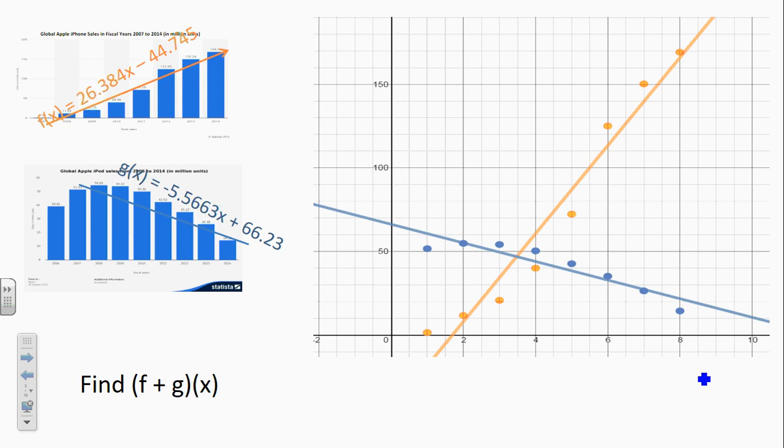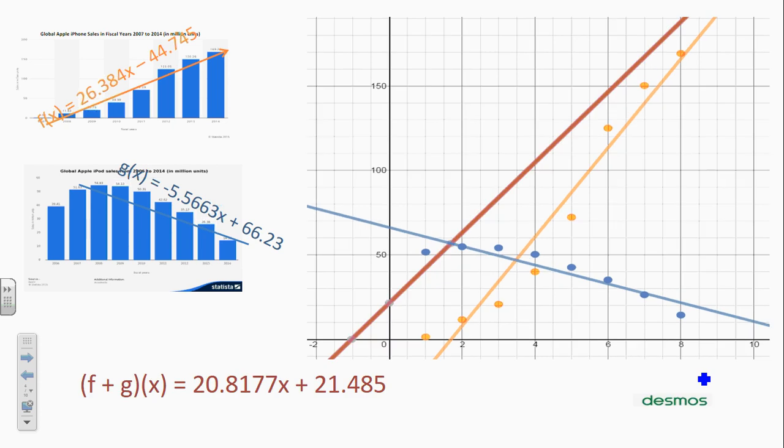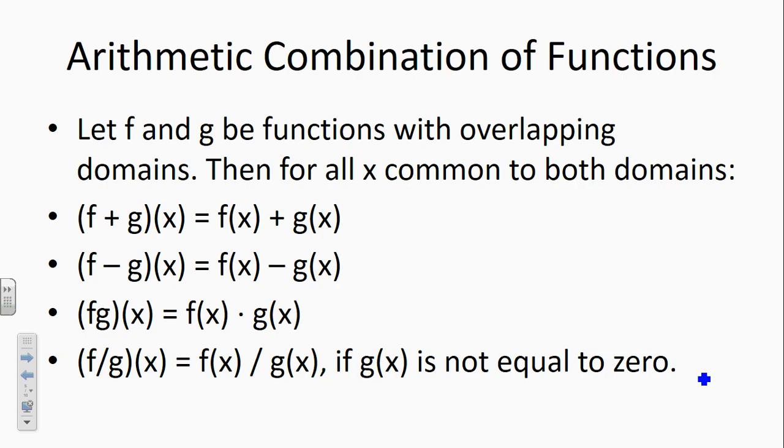If we want to know how many sales we have all together, what would we do? I have one equation with iPod sales. I have one equation with iPhone sales. I want to see the two together. Together means add. Yeah, we're just going to add them up. So when we add the two equations up, this would be the trend line. We're definitely better off with them than without, right? Which is what we would predict. So that's an arithmetic combination of two functions.